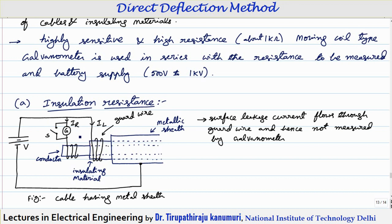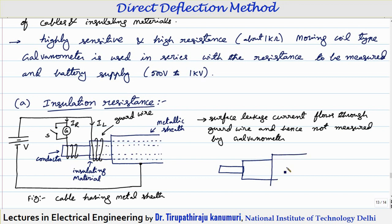There is a second problem also. For example, this is a conductor and this is the insulator. Drawing it here — if you are taking the cable, this is the conductor, above this there is some insulation, and here there is a sheath.